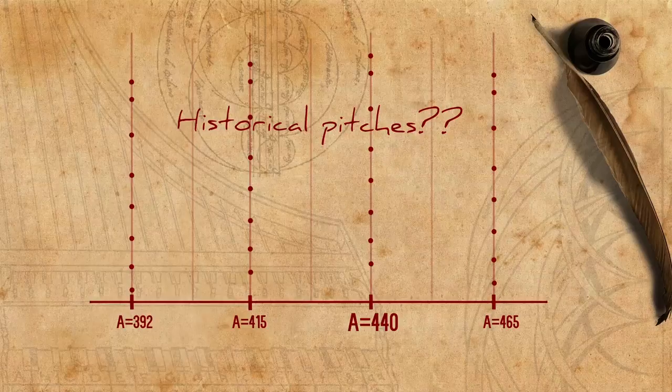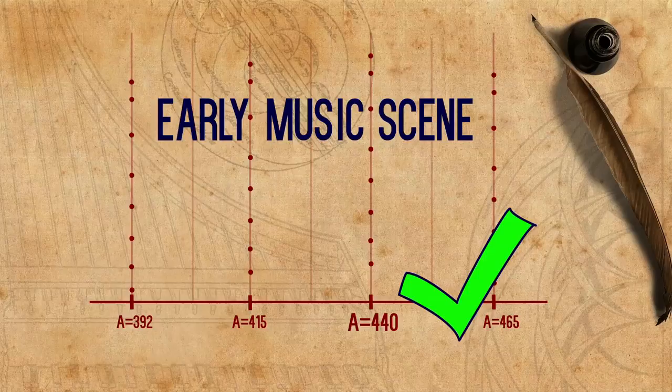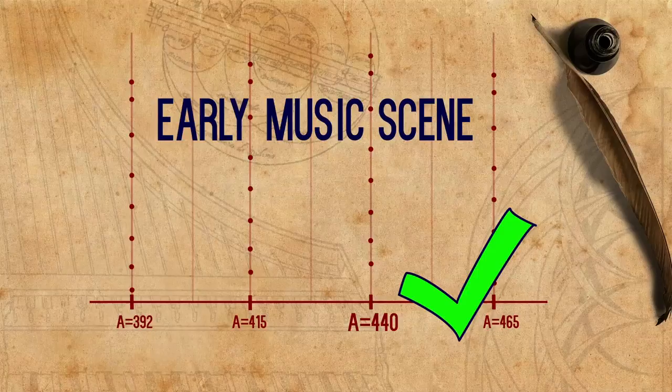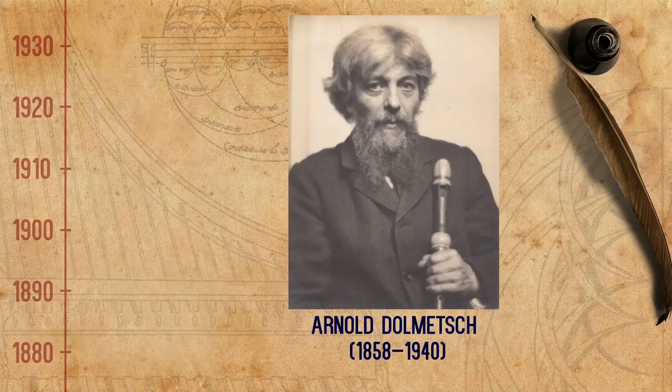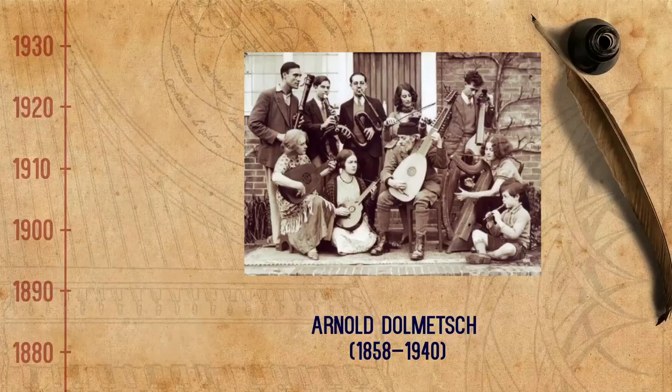The early music scene adapted itself to this grid — dimensions of copies of historical instruments are being scaled to fit the grid of A equals 440 with its equally tempered semitones. Needless to say, these adaptations distance us from the original quality of the instruments. But when did we actually start using historical pitches? The early music pioneer Arnold Dolmetsch was one of the first to reconstruct instruments according to historical models, and it appears that at least in some cases he did it at their original pitch, which was lower than the contemporary pitch.